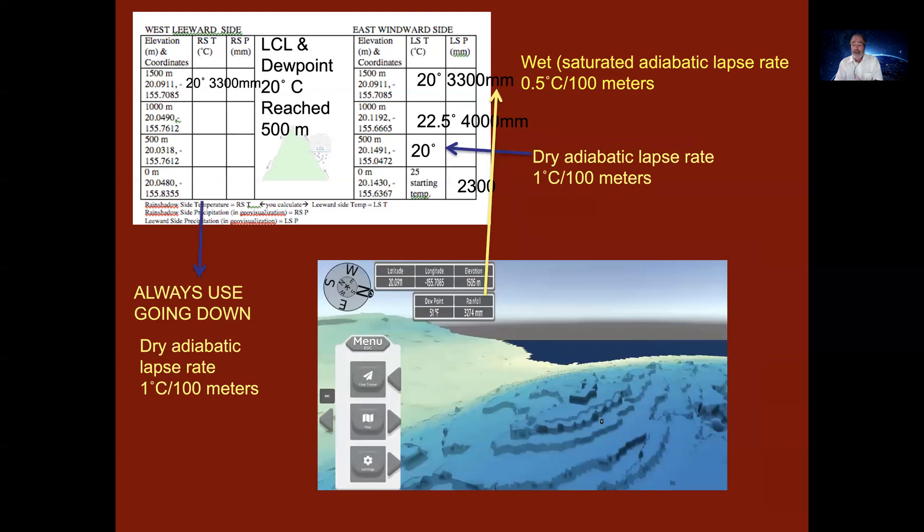Then there's another drop in 2.5 degrees when you go up to 1500 meters. And then notice that at the 1500 meter elevation, I simply copied over the information of 20 degrees temperature and 3300 millimeters rainfall. Because you're simply going across the volcano. And now we're going to take it down.